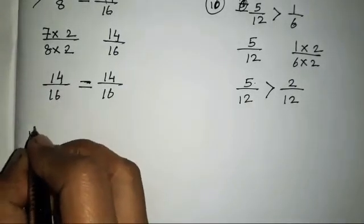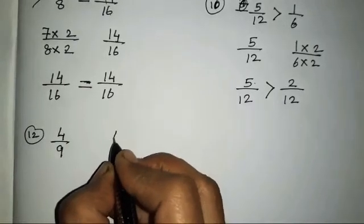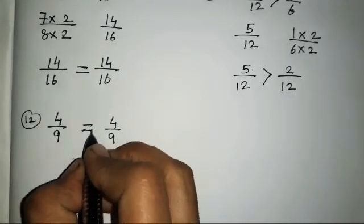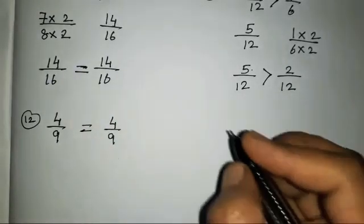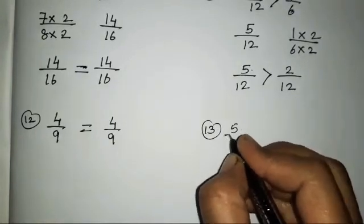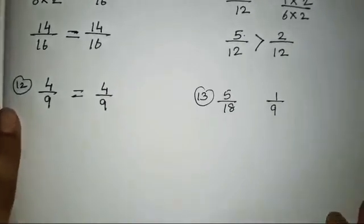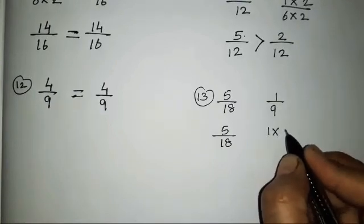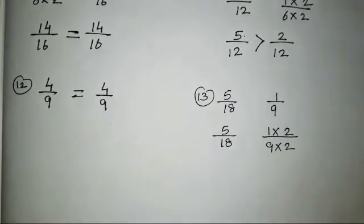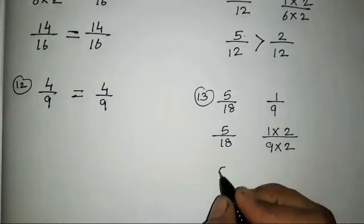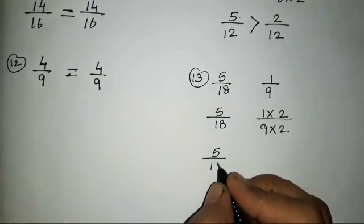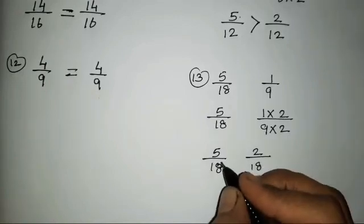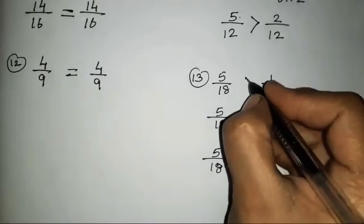The 12th sum is 4 upon 9 and 4 upon 9 — numerator and denominator are both the same, so both fractions are equal. The 13th sum is 5 upon 18 and 1 upon 9. In the 9 times table, 18 comes by multiplying with 2. Keep 5/18 as it is; multiply 1/9 by 2: 1 two is 2 and 9 twos are 18. Since 5 is greater, 5/18 is greater.